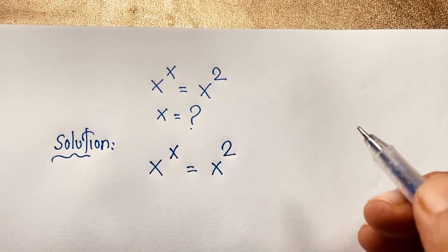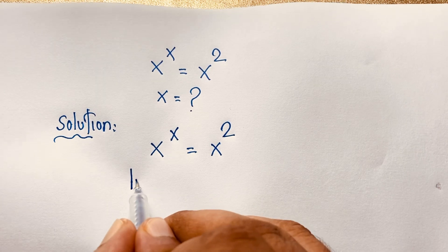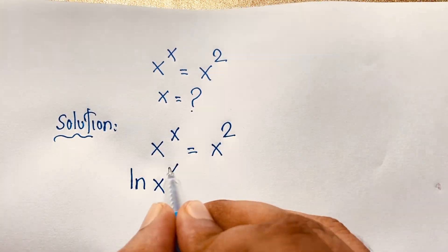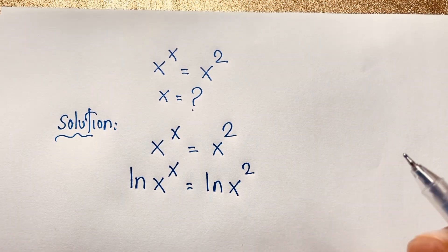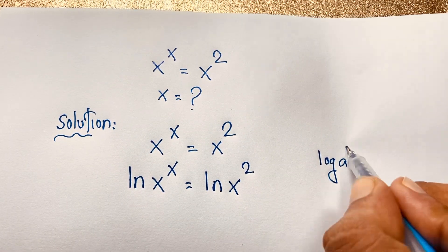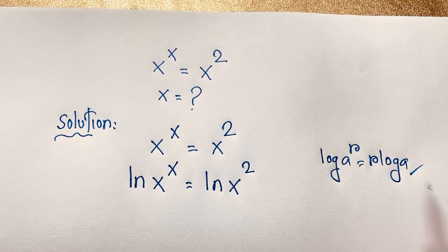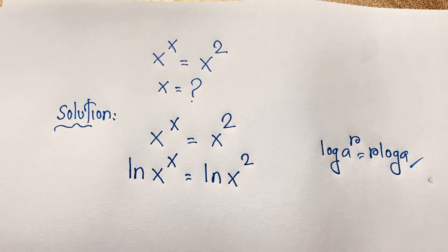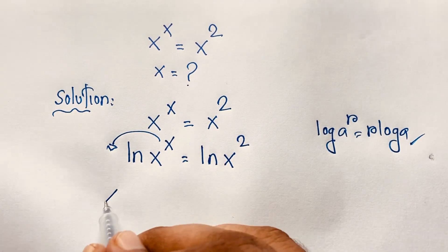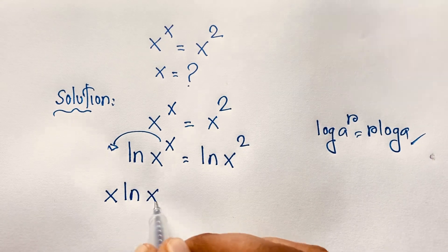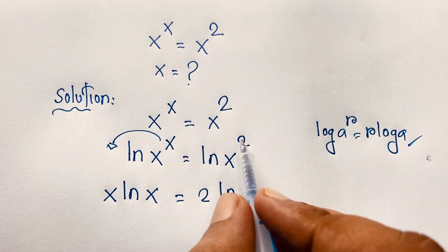Now I apply natural log (ln) to both sides: ln(x to the power x) is equal to ln(x to the power 2). Using the log rule that log(a to the power r) equals r·log(a), I apply this formula here — the exponent moves to the front — so this expression becomes x·ln(x) is equal to 2·ln(x).